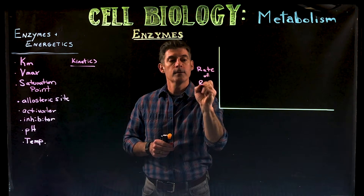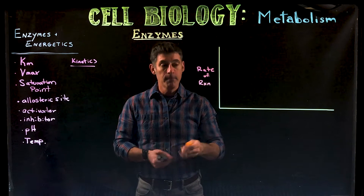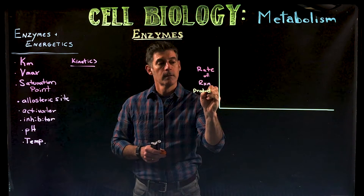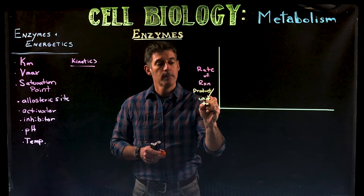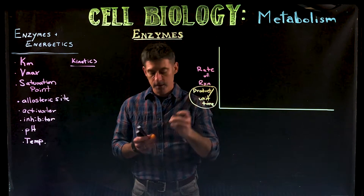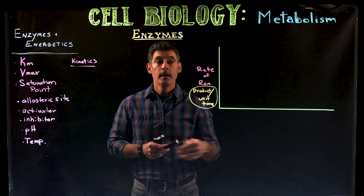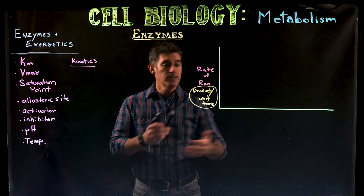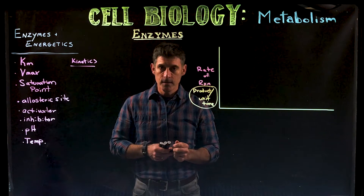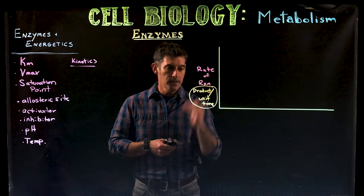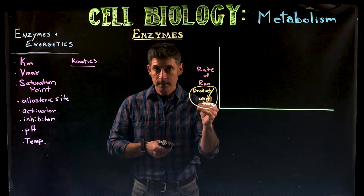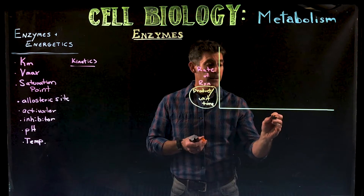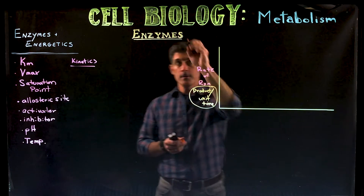The rate of reaction has to have some type of unit, and that unit is going to be product per unit time. This is really generic — product could be in a concentration, say moles of a particular molecule produced per second. You can have different units of time and different concentrations for the product, but the idea is how much product is made in a certain amount of time. This is in the presence of an enzyme, so we're obviously talking about enzymes here.